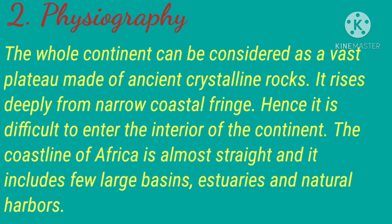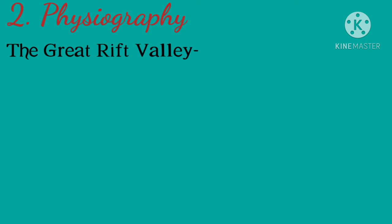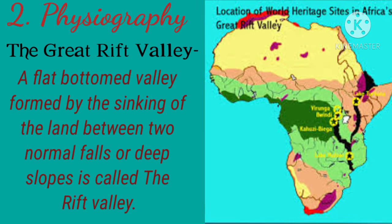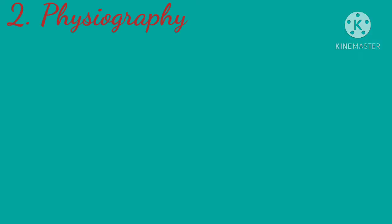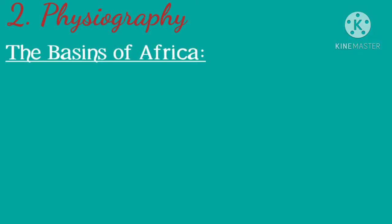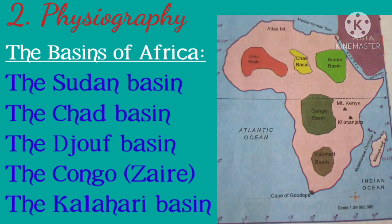The Great Rift Valley is a flat-bottomed valley formed by the sinking of land between two normal faults or deep slopes. The Rift Valley of Africa is 6,900 kilometers long and is Y-shaped. The major basins of Africa are the Sudan Basin, the Chad Basin, the Jauf Basin, the Congo Basin, and the Kalahari Basin.